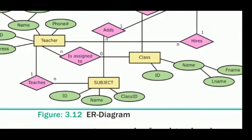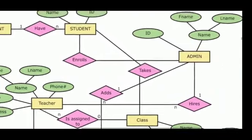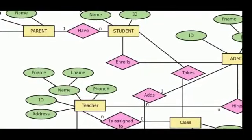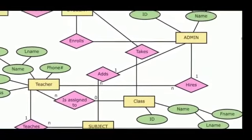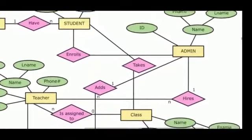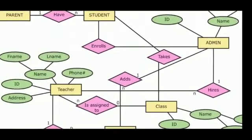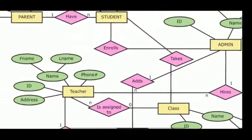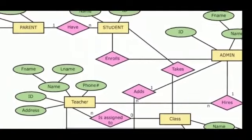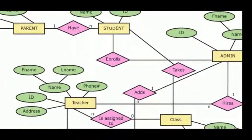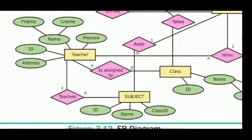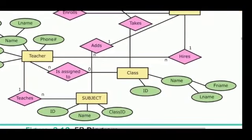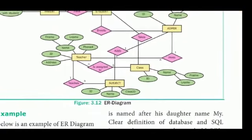Here is the entity listing. Total entities are: Parent, Student, Teacher, Subject, Class, and Admin. We can connect the entire entity through relationships: Have, Enroll, Takes, As, Is Assigned To, Teach, and Hires.